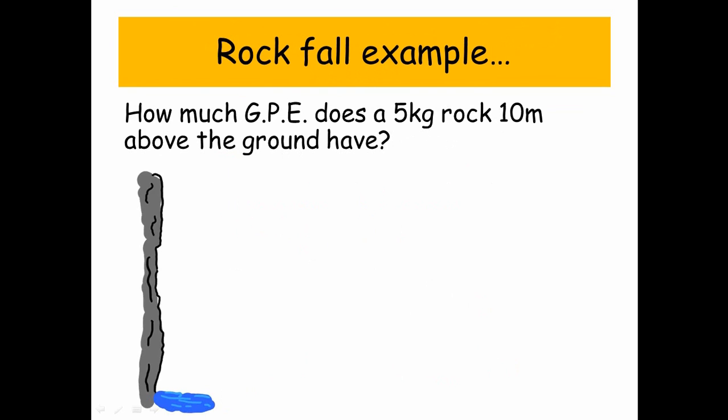So let's look at a rockfall example. How much gravitational potential energy does a 5 kilogram rock 10 meters above the ground have? So here's a rock, and it's 5 kilograms, and it's at a distance of 10 meters.